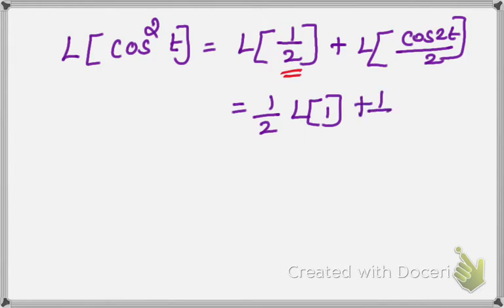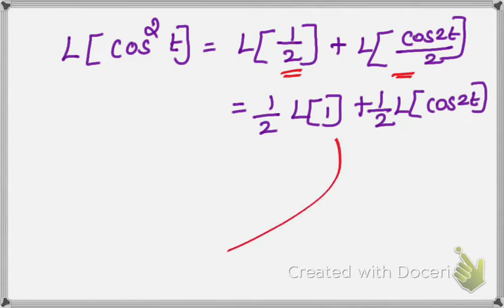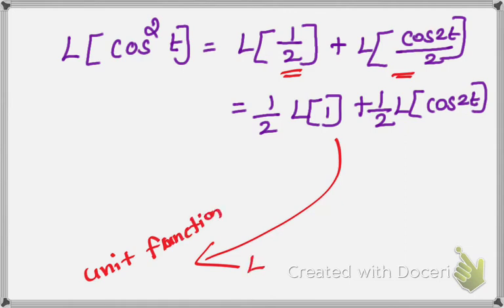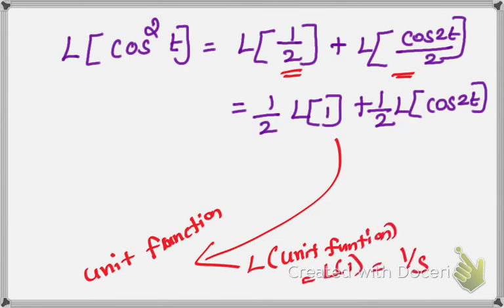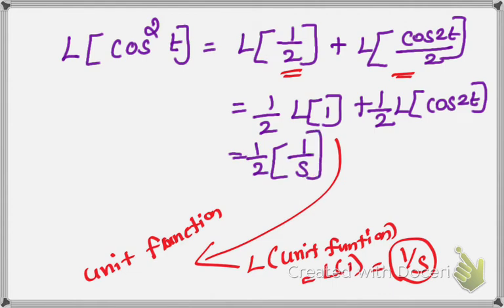For the second term, taking 1 by 2 outside, the remaining term is L of cos 2t. Now applying the formulas: we know L of 1 is the unit function, and the Laplace transform of the unit function, L of 1, equals 1 by s. So the first term gives 1 by 2 into 1 by s.